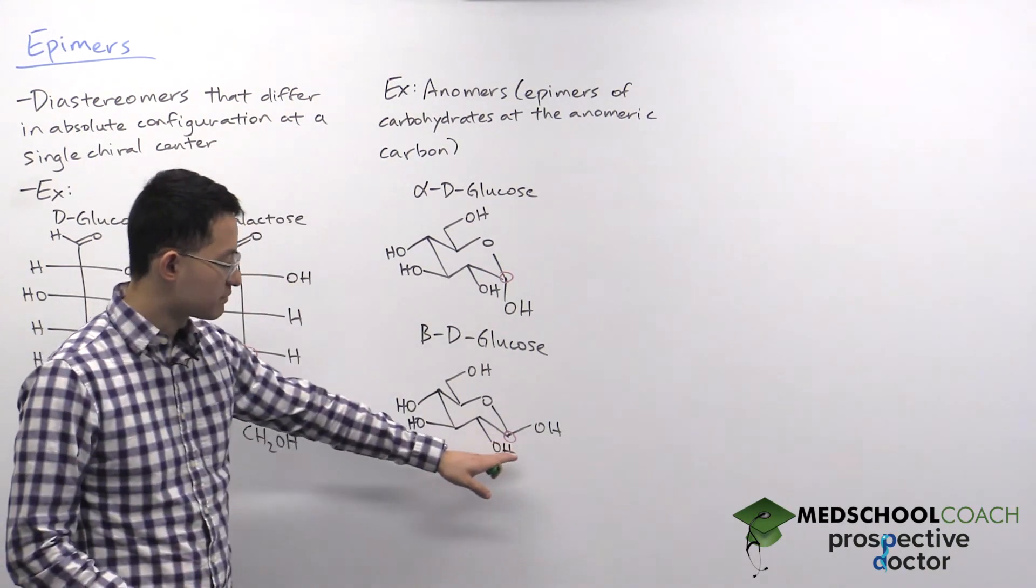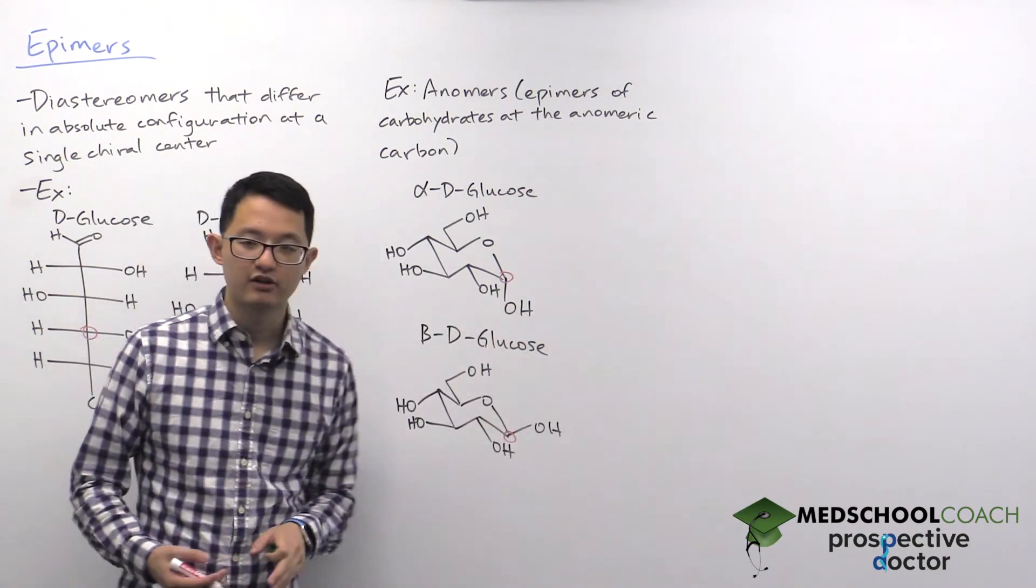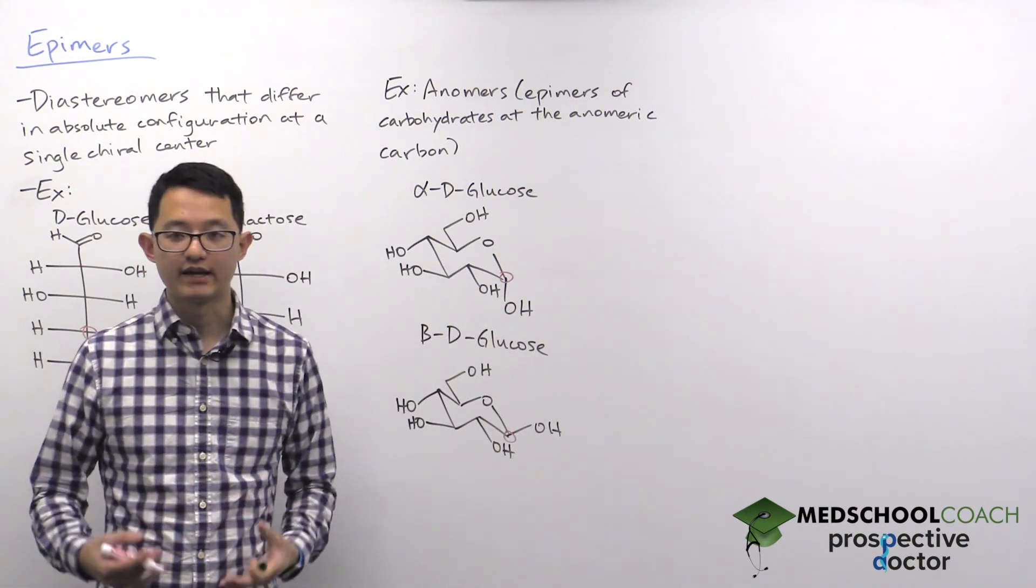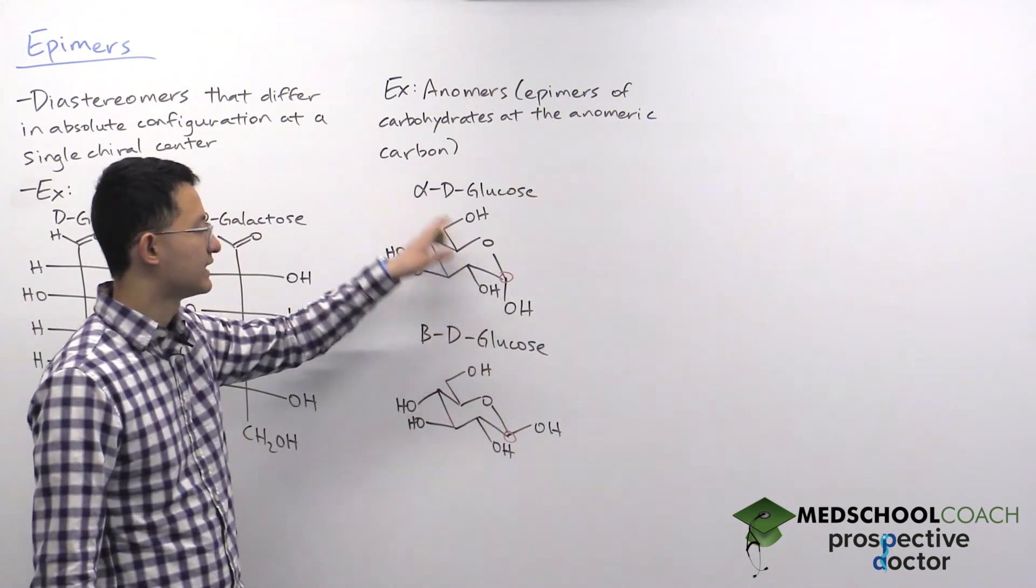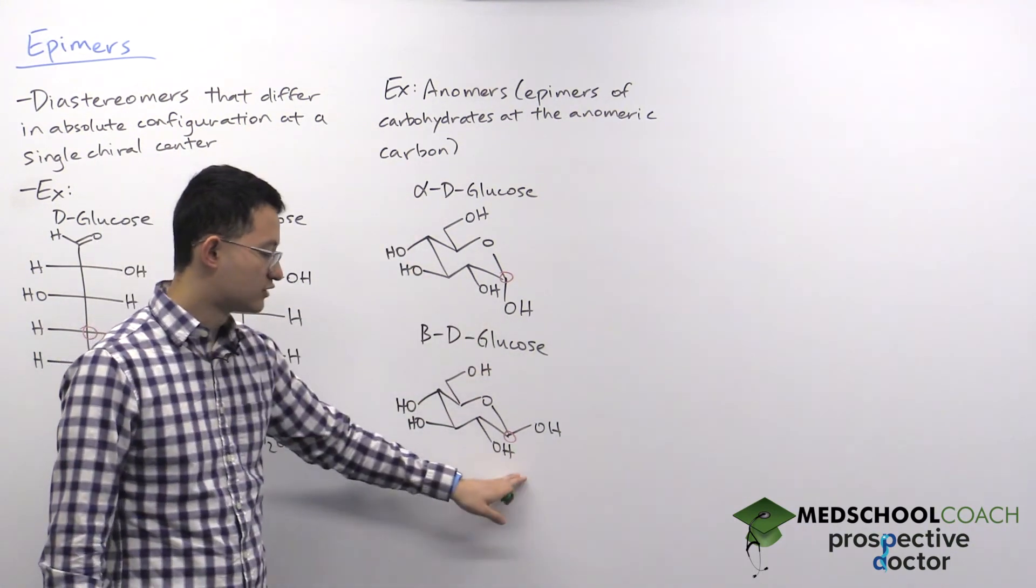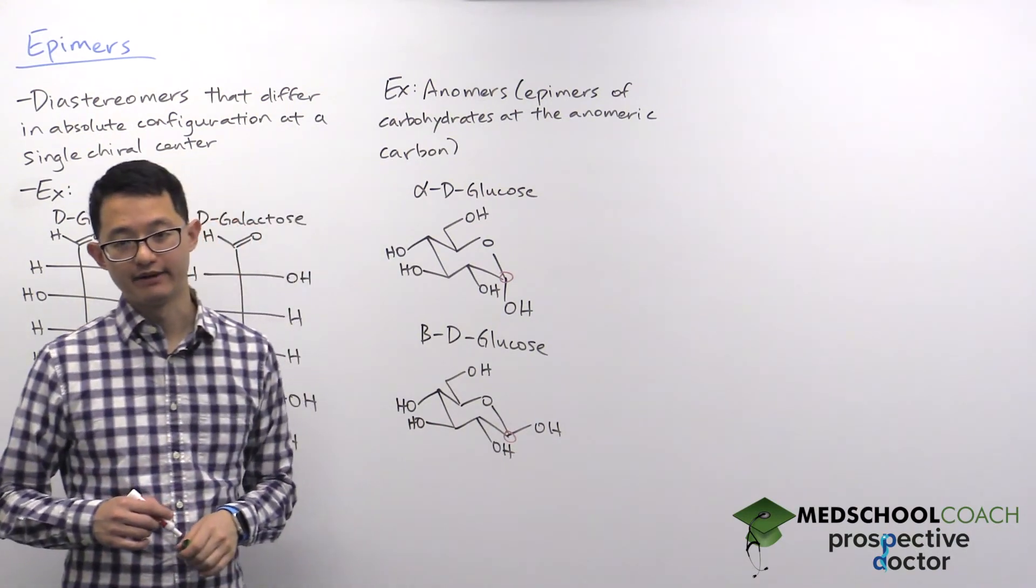But again, the fact that it happens specifically at the anomeric carbon means that they are anomers. And when the hydroxyl group is facing down, that's the alpha anomer. When the hydroxyl group is facing up, that is the beta anomer.